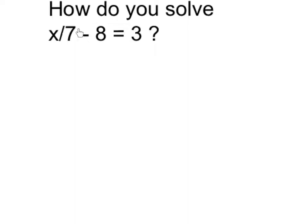To solve this two-step equation and get x alone, we want to work backwards, order of operations, undoing the things that are being done to x. So as we see, first x is divided by 7, then we subtract 8.